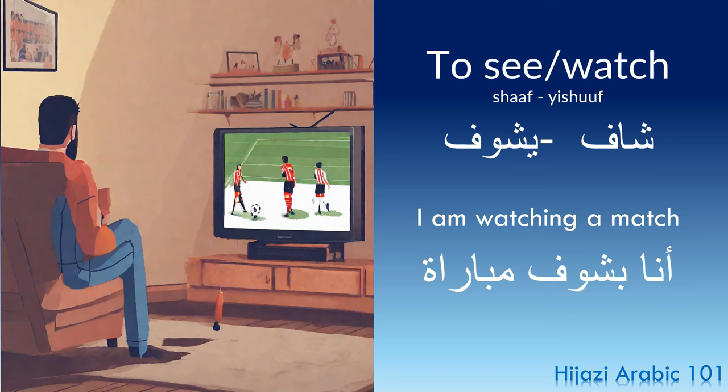The first verb is 'to see' or 'to watch.' Past tense: shaf. Present tense: yishoof. Example: 'Ana bashoof mubaraa' — I am watching a match. The 'ba' in bashoof is like the '-ing' in 'watching,' and mubaraa means 'a match.'